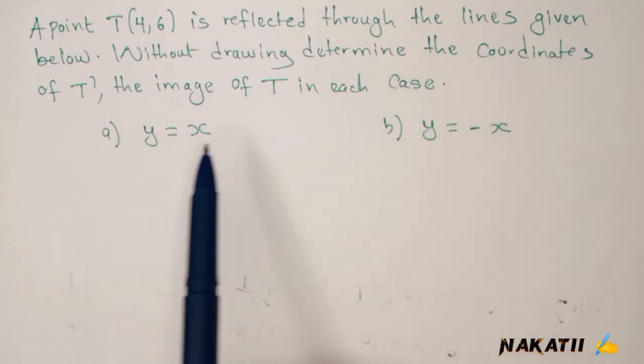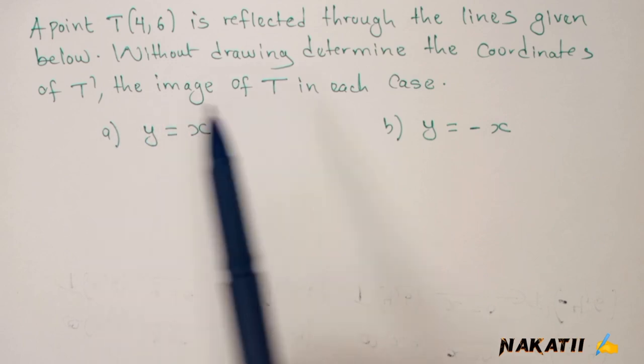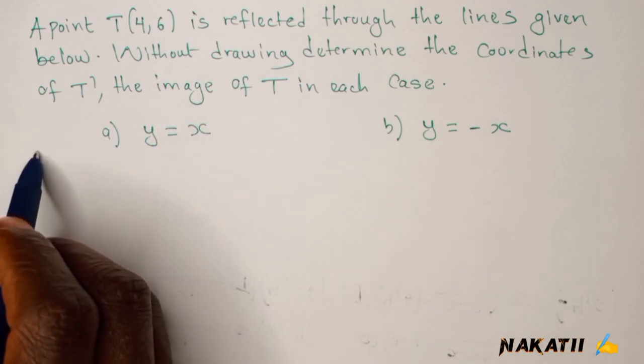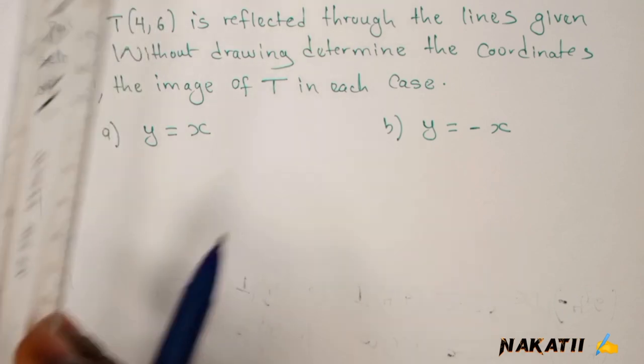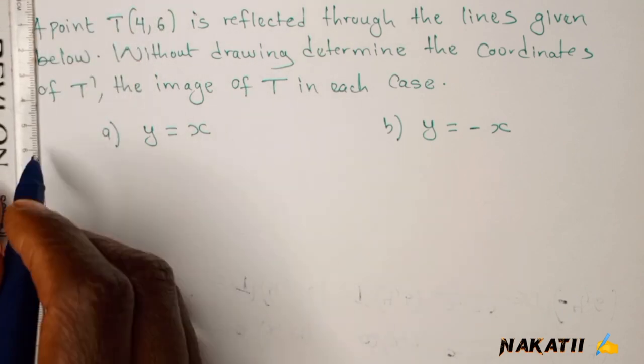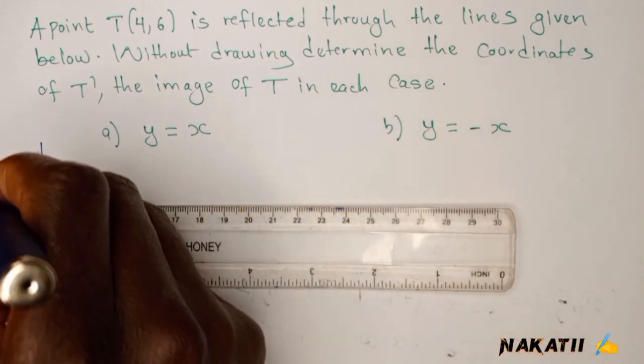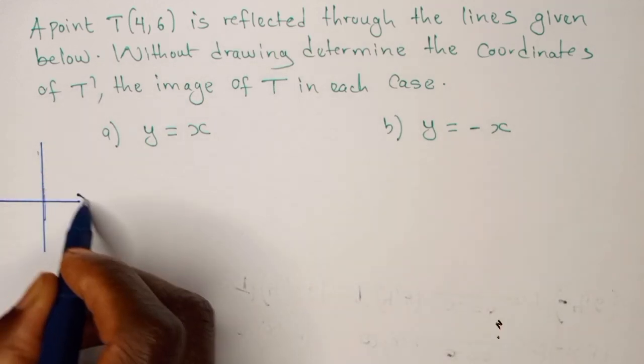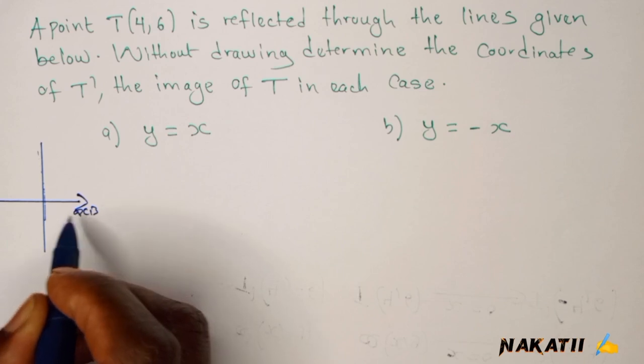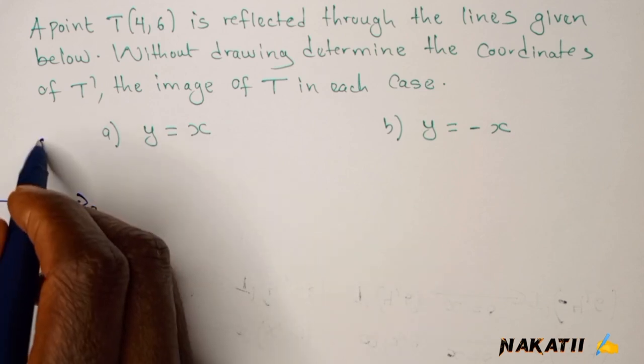In reflection, we need to know where this line is. If you were to do your Cartesian plane like this, so this is your Cartesian plane, this is your x-axis and this is your y-axis.